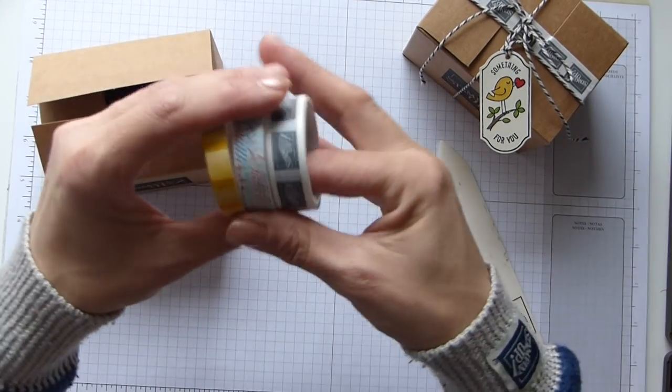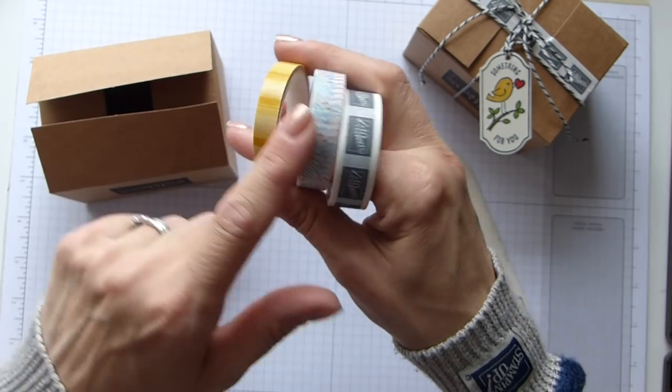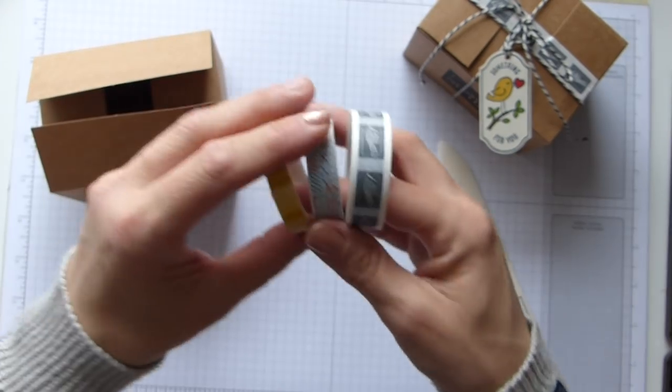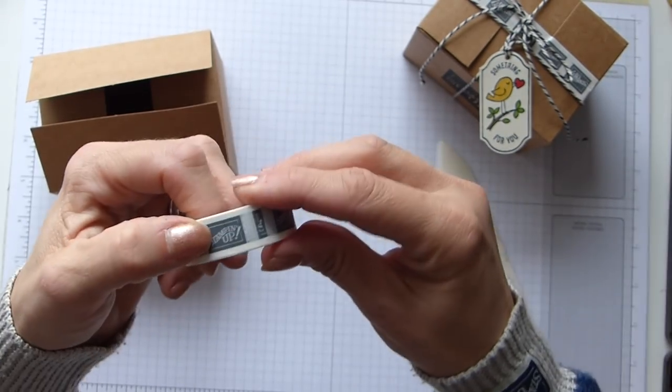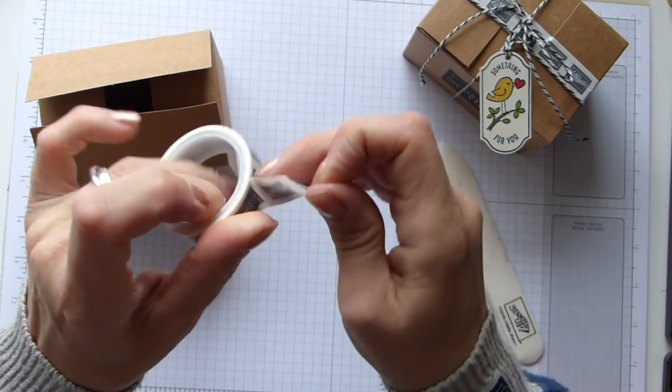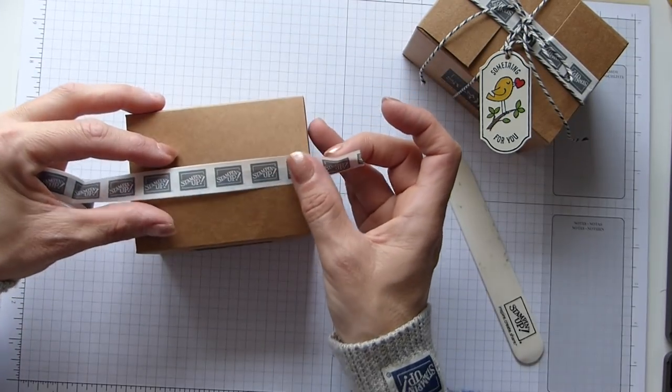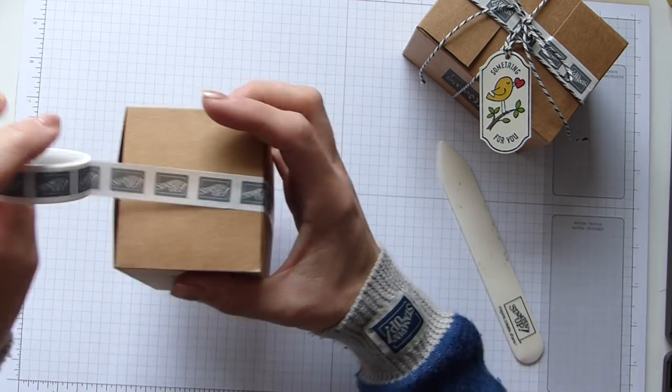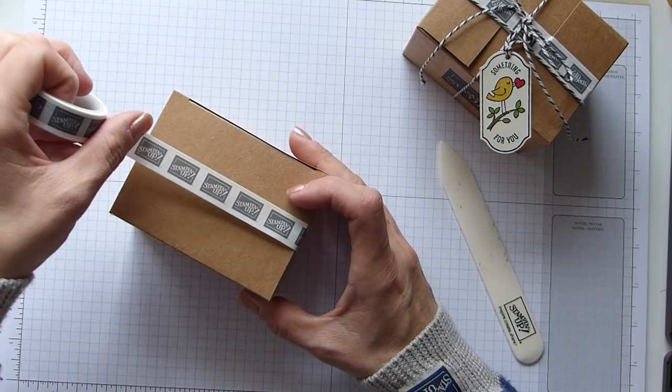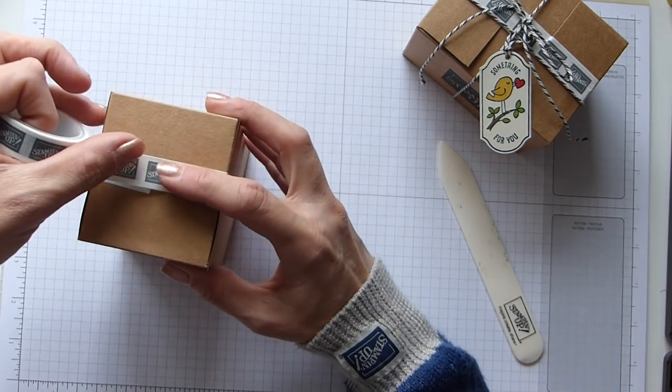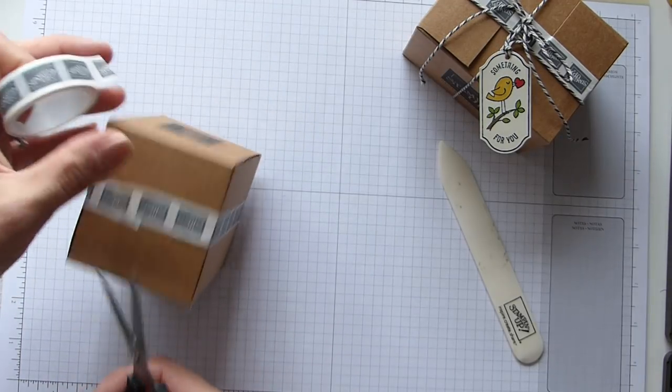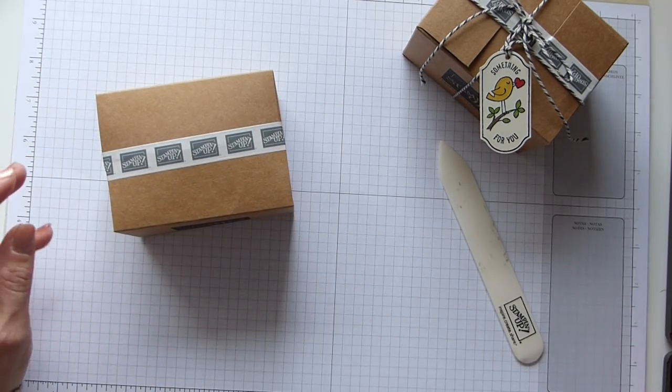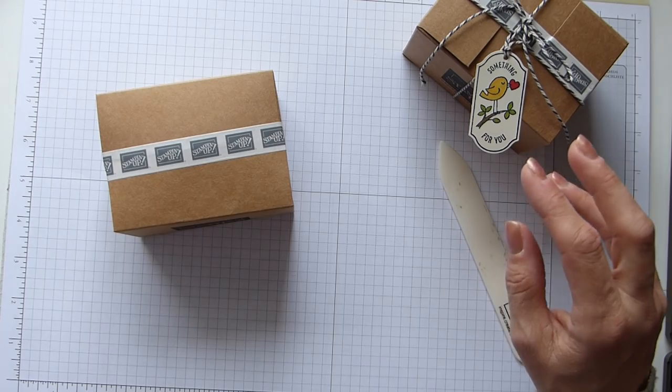Then we have the Follow Your Art washi tape, which is part of the Follow Your Art suite. We've got this fabulous washi tape that is the Stampin' Up packing tape that we get. You can just stick this all the way around. It's not quite strong enough to hold the box tight itself really, so I would suggest using something else.